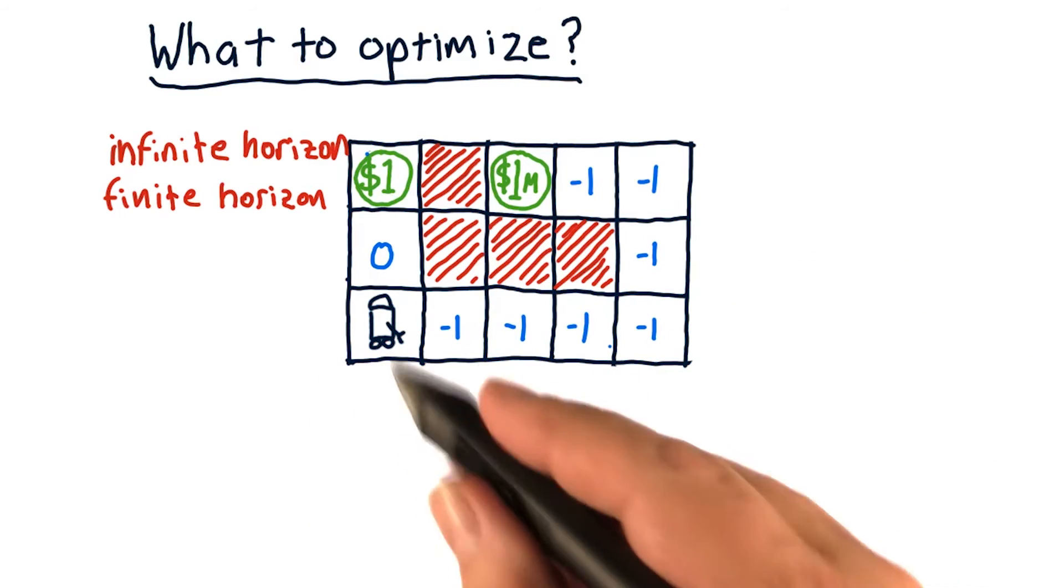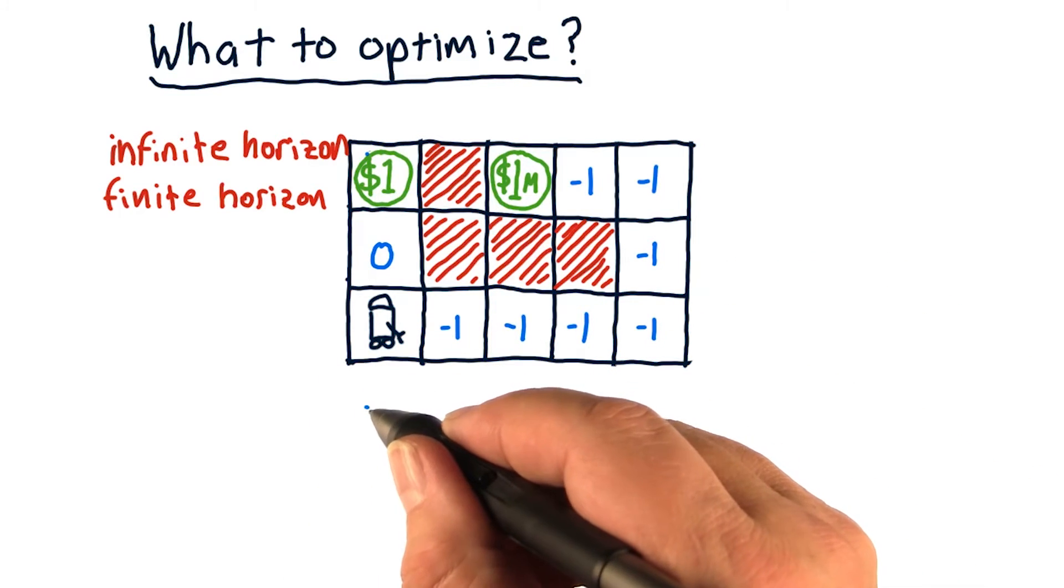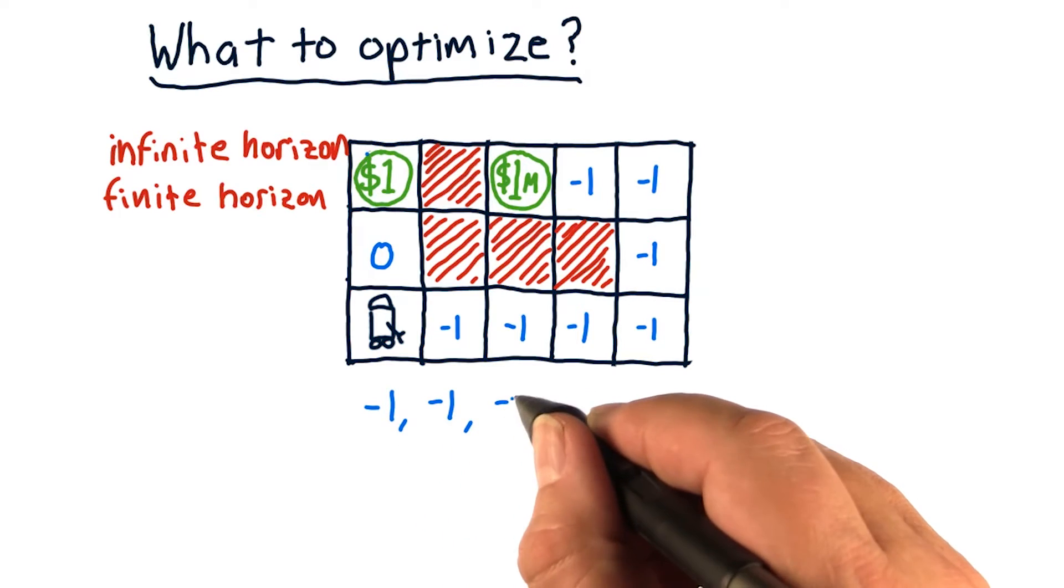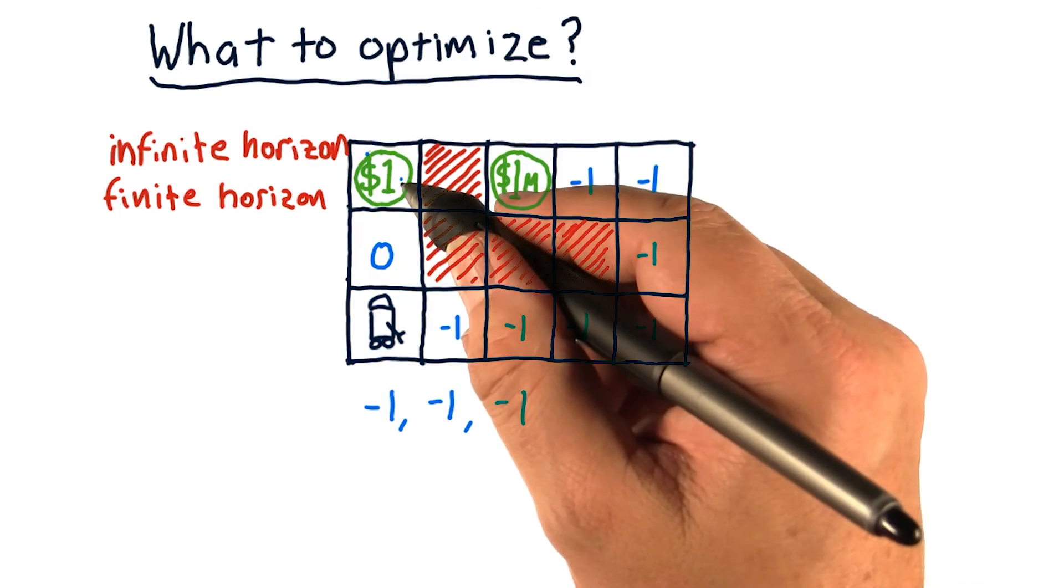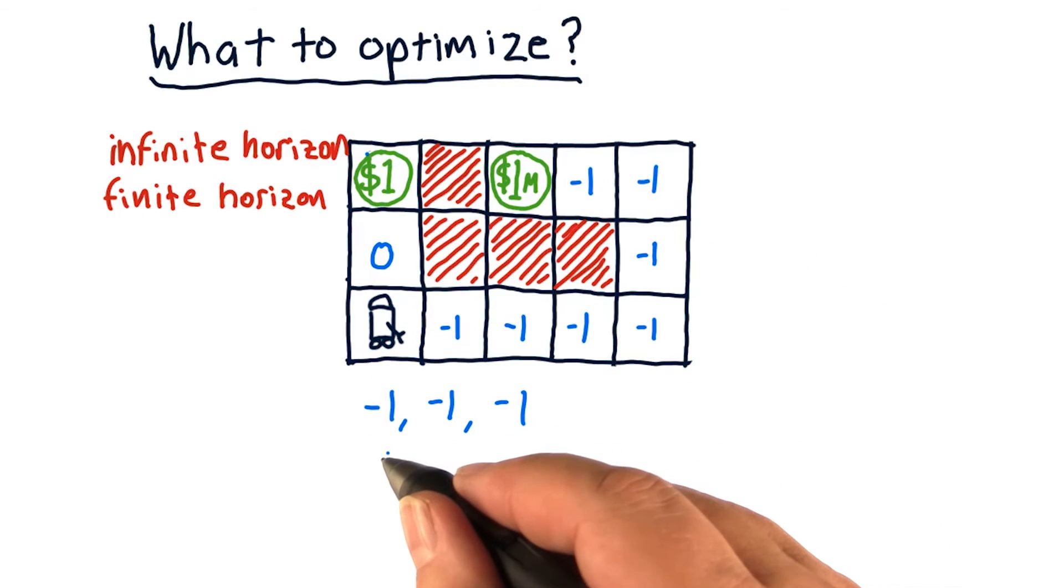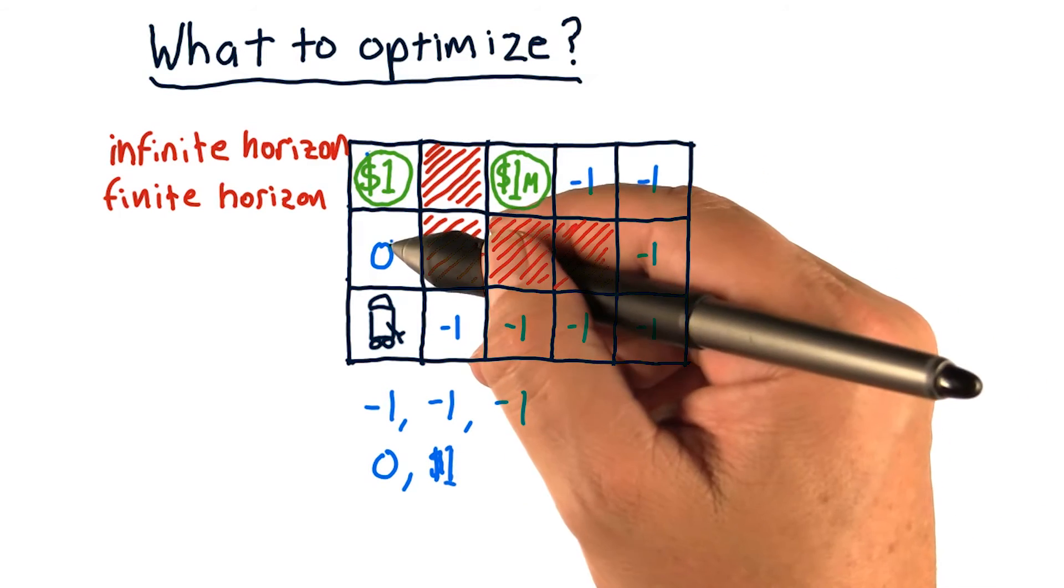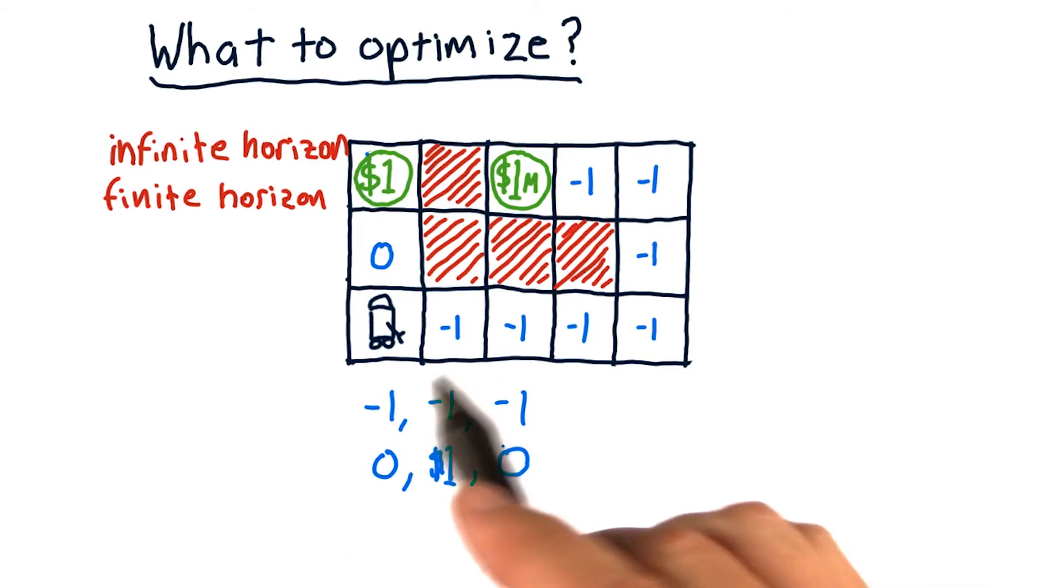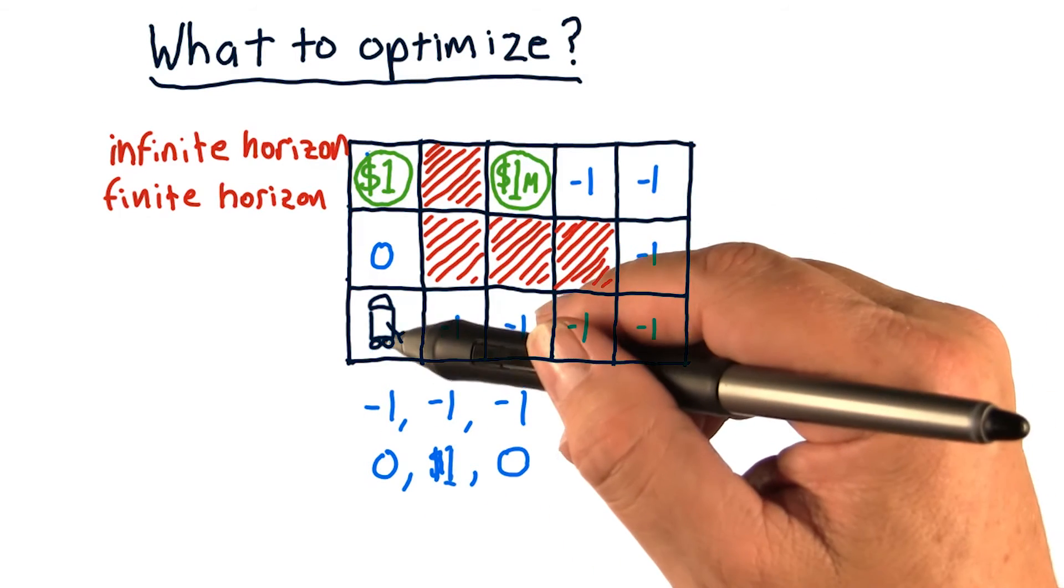So if we go this way, we're going to get rewards of negative one, negative one, negative one. And if we go this way, we get zero, one dollar, and then we have to move down here and get another zero. So clearly, starting here with a finite horizon of three, the best thing to do is go up there.